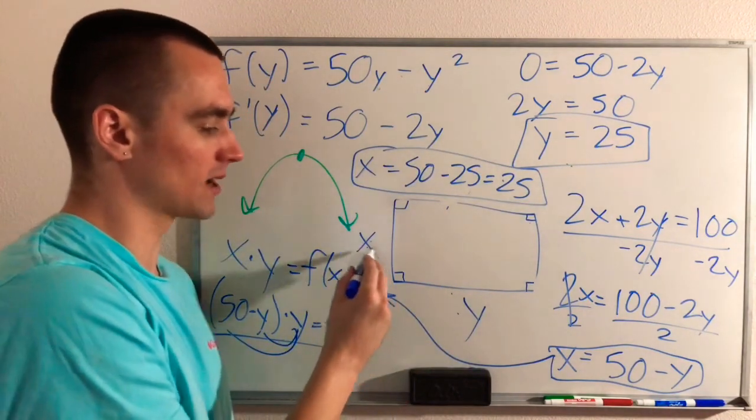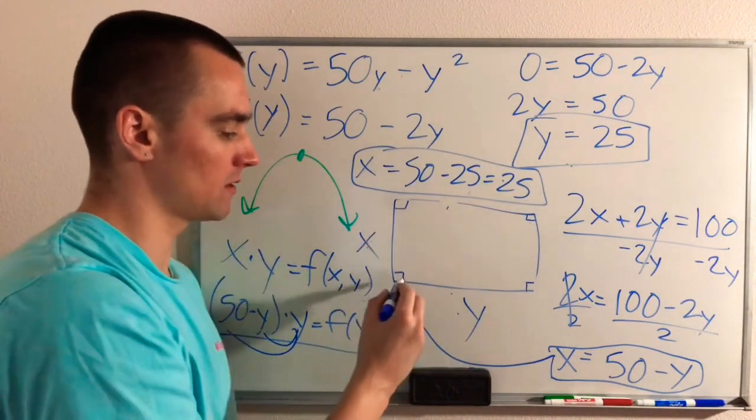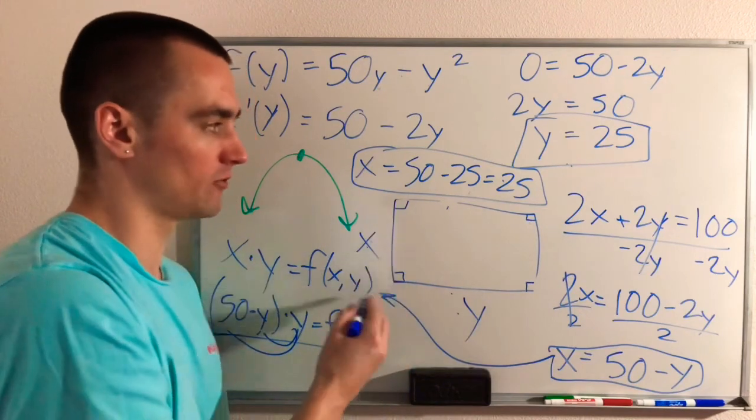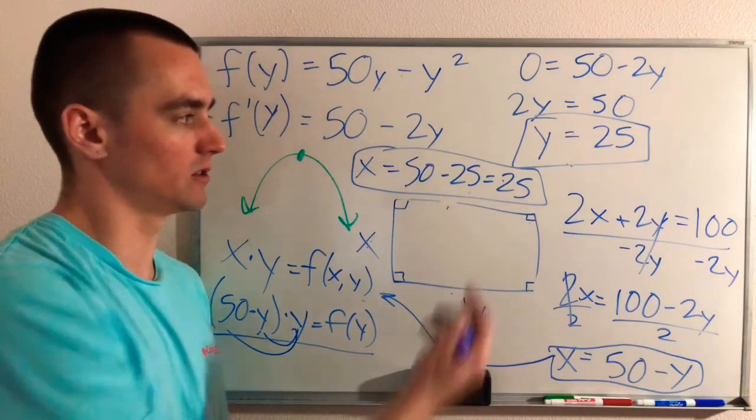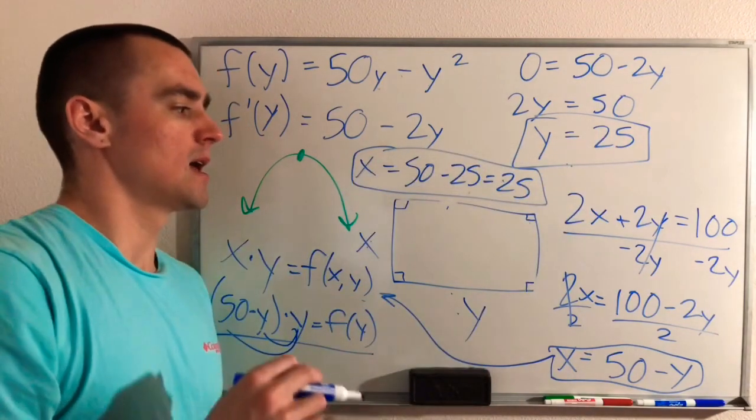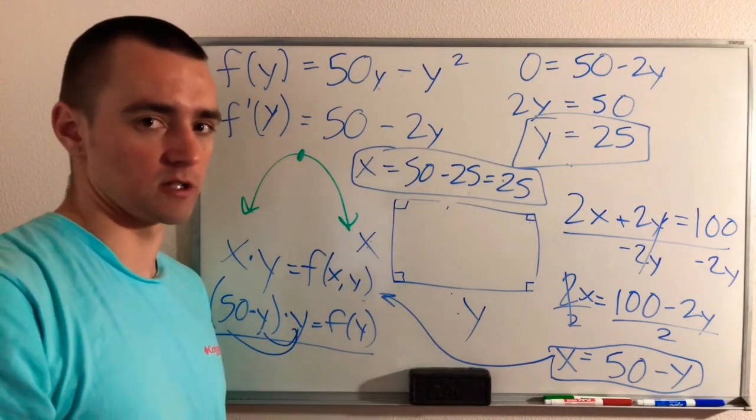So X and Y both being 25, or in other words, our rectangle having width and height of 25 will mean that our rectangle will have a perimeter of 100 meters. So these would be 25 meters. And the area is going to be as large as possible.